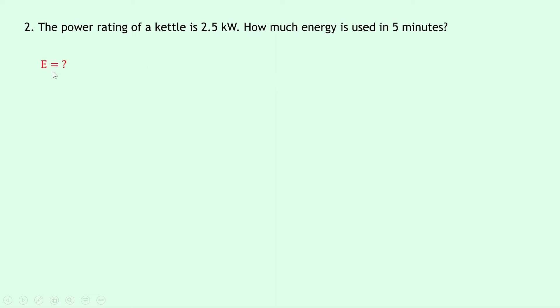So writing down what we know from the question, we're trying to find the energy, we know that the power is 2.5 kilowatts, which is the same as 2.5 times 10 to the 3 watts, and the time is 5 minutes, so 5 times 60 gives us 300 seconds.